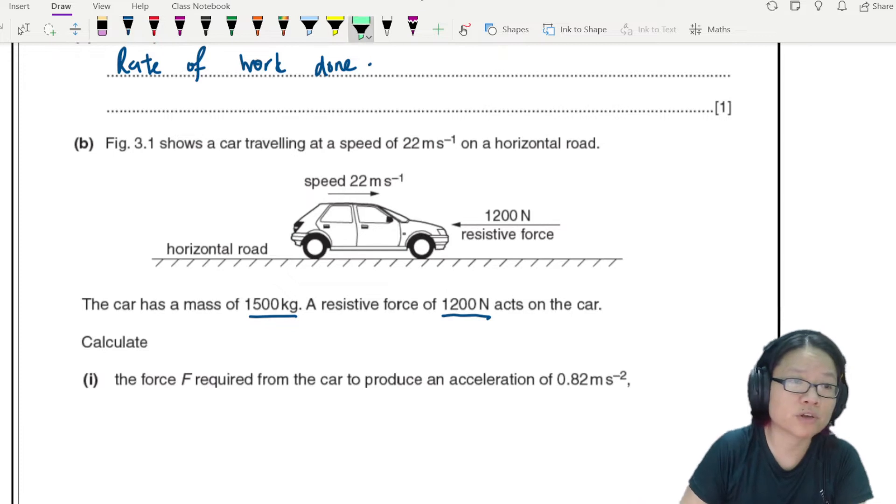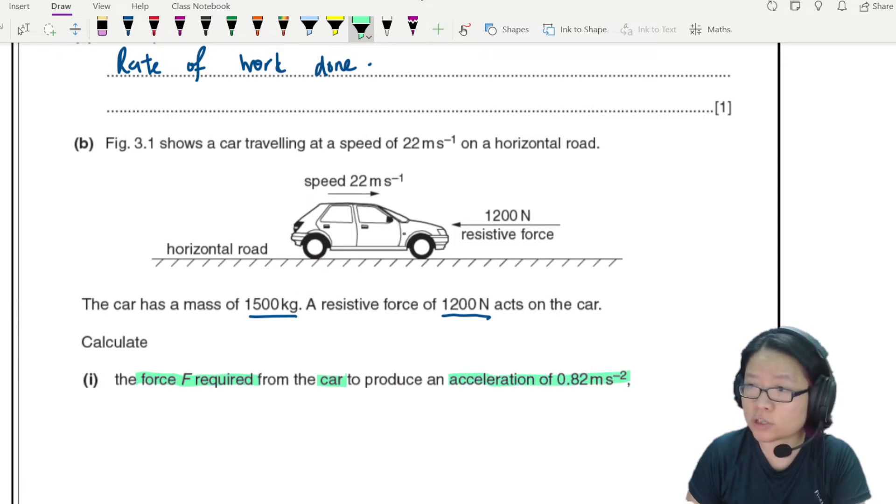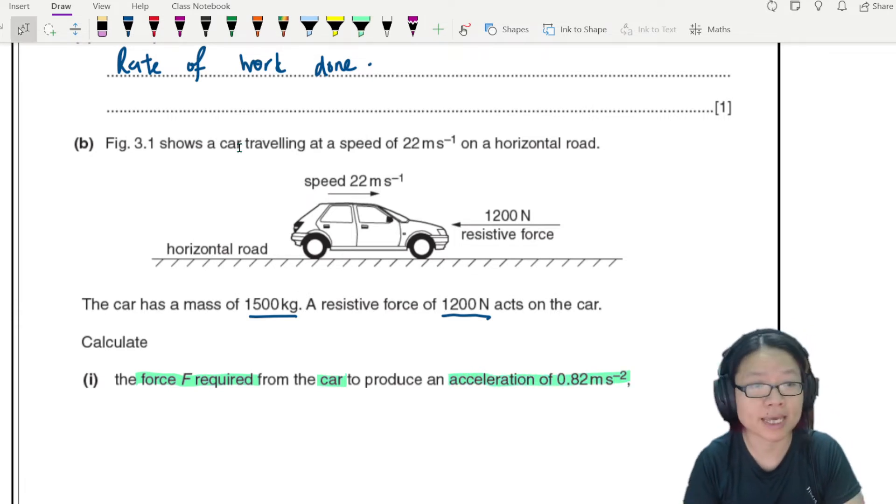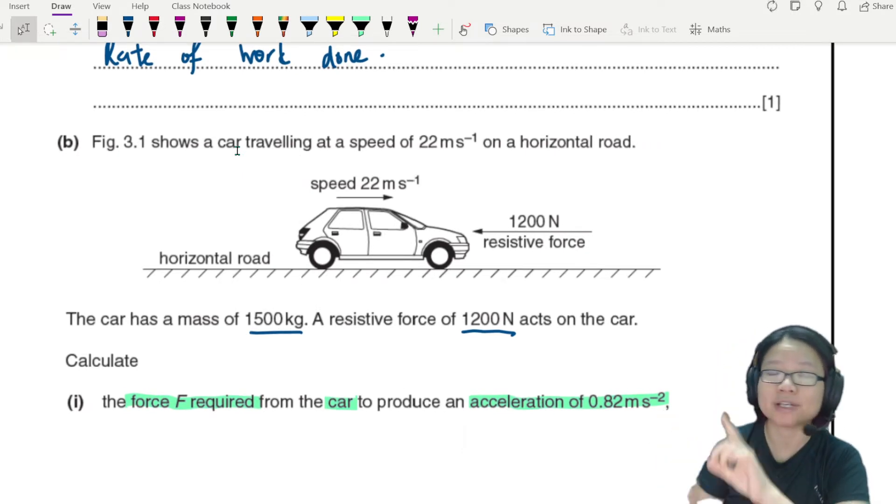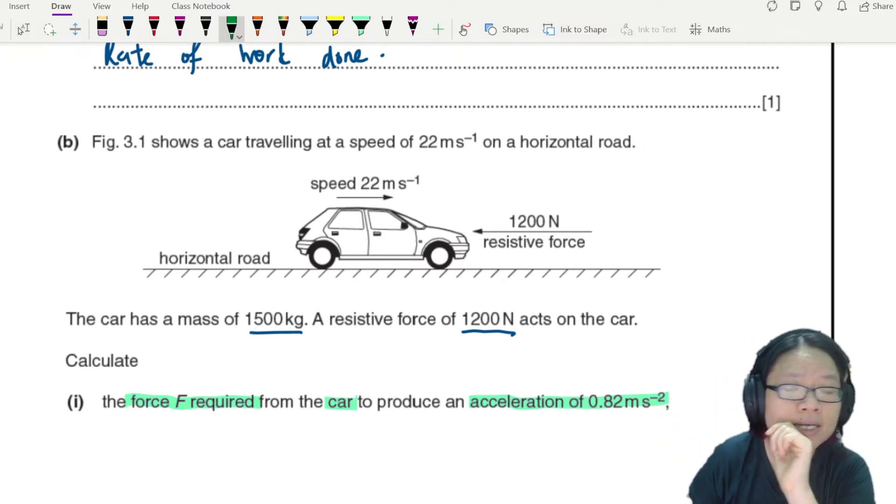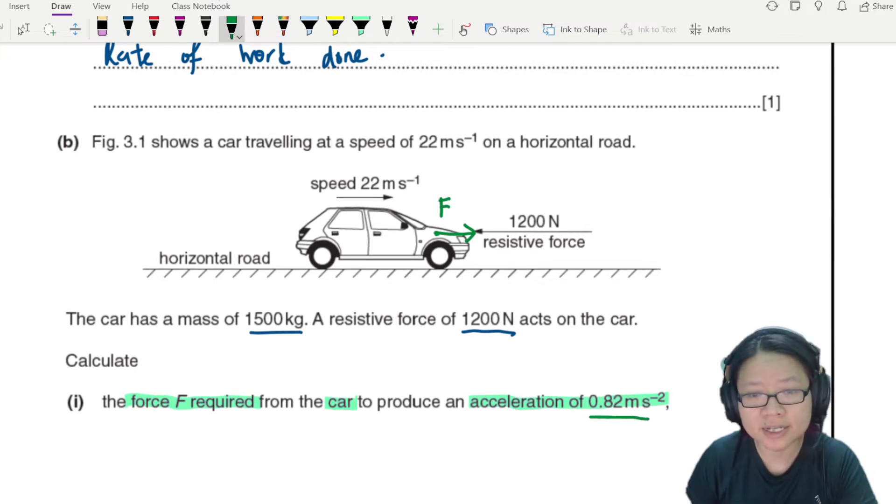You are asked to calculate the force required from the car to produce an acceleration of 0.82 meters per second squared. How much force do I need to push the car forward? The engine here is going to push the car forward and we need this acceleration.